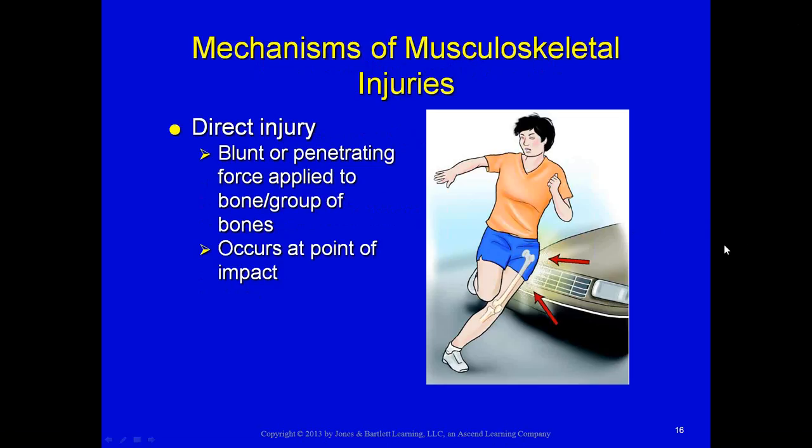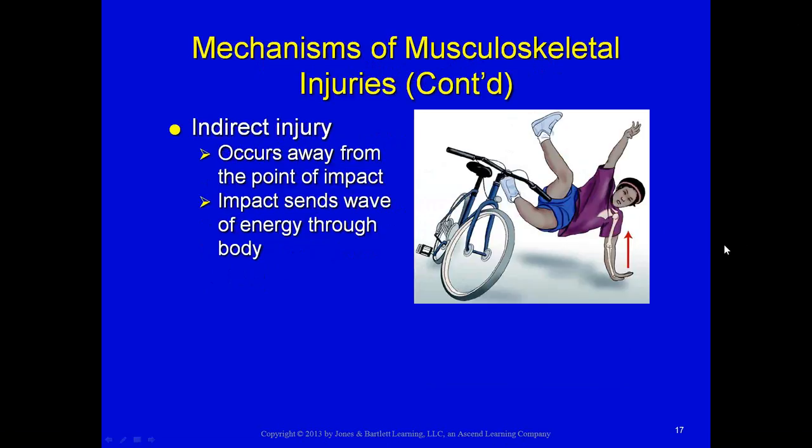Direct injury can be blunt or penetrating, applied to the bone or a group of bones — as in the chest — occurring at the point of impact, illustrated here as a bumper striking a femur. Indirect injury occurs away from the point of impact; the impact sends a wave of energy through the body. For example, falling on an outstretched hand: if force is transmitted to the wrist, both the radius and ulna can fracture; if not, the elbow can dislocate; if not, you can have a humerus fracture or dislocated shoulder.